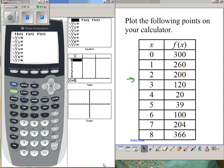Go to stat edit and in list one type in the numbers 0, 1, 2, 3, 4, 5, 6, 7, 8. In list two I'll put in my y-values: 300, 260, 200, 120, 20, 39, 100, 204, 366. I would suggest you do this with your calculator along with me because math is not a spectator sport, it's a doing thing.